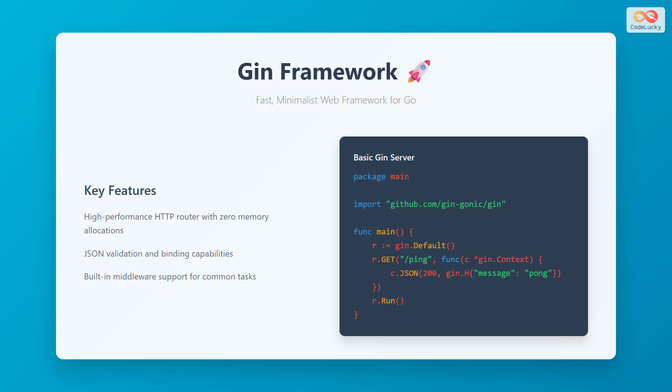You import the JIN package, create a default router instance, define a GET endpoint that responds with JSON, and start the server. The syntax is clean and intuitive, making it easy for developers to get started quickly. JIN's minimalist approach means you get essential features without unnecessary bloat, resulting in faster compilation times and smaller binary sizes.